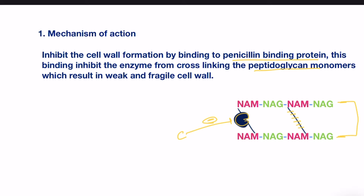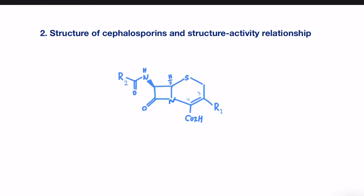So we can say, in general, cephalosporins share the same mechanism of action with penicillins and other beta-lactams. Then what makes them distinguishable from other beta-lactam antibiotics? To find out, we need to take a look at their structure.